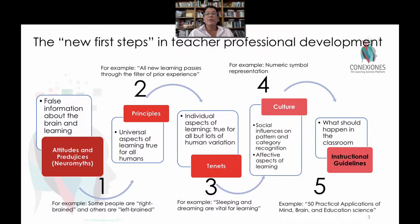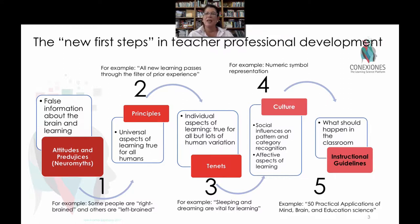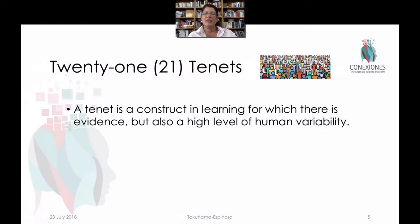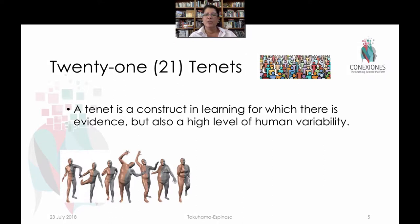For example, motivation — is that important for learning? Absolutely. But what motivates you doesn't necessarily motivate me. Sleep, nutrition — we know that there are at least 21 Tenants that are also impacting student learning outcomes, but it's very hard to prescribe specific interventions due to the uniqueness of individuals. So we define a Tenant as a construct in learning in which there's a lot of evidence, but there's also a huge range in human variability.